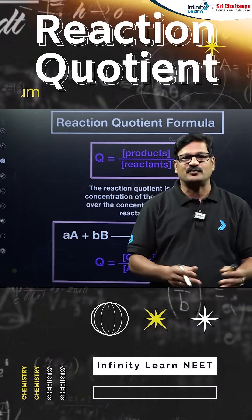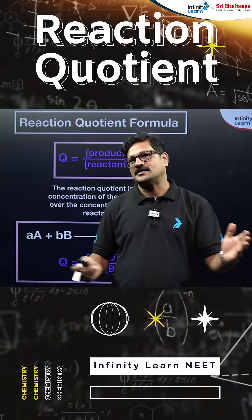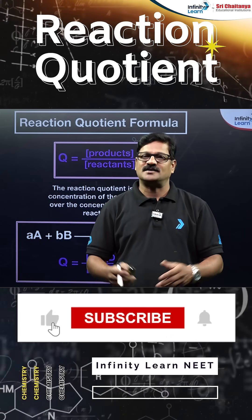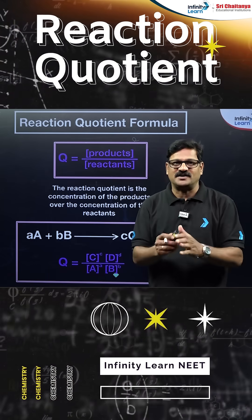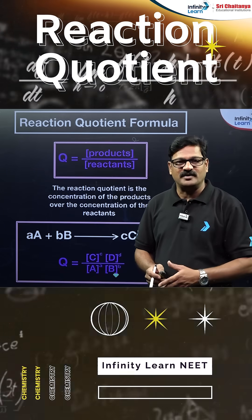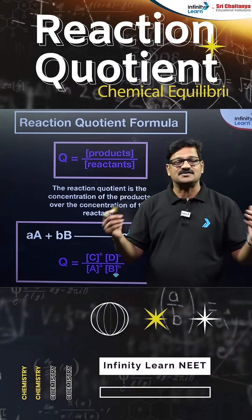The only difference between the equilibrium constant and the reaction quotient is the time at which we are calculating. At the state of equilibrium, it is the equilibrium constant. At any instant of the reaction, it is the reaction quotient.